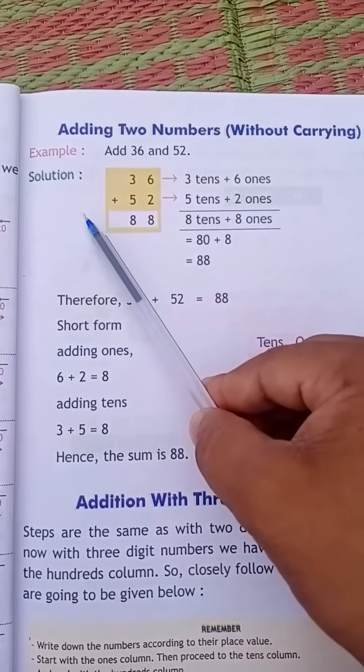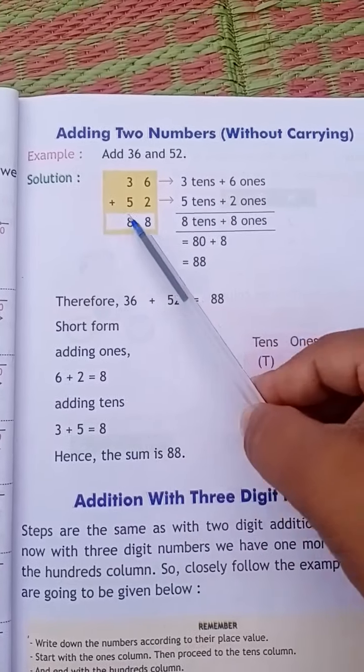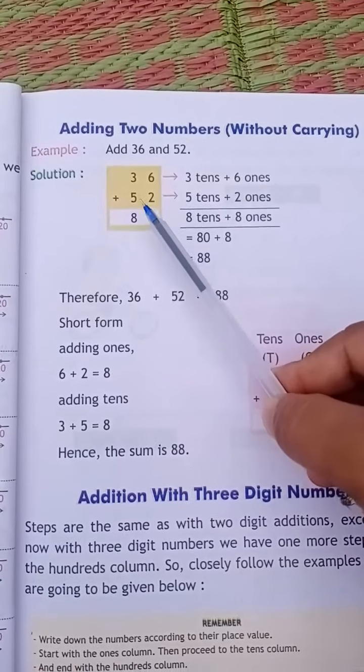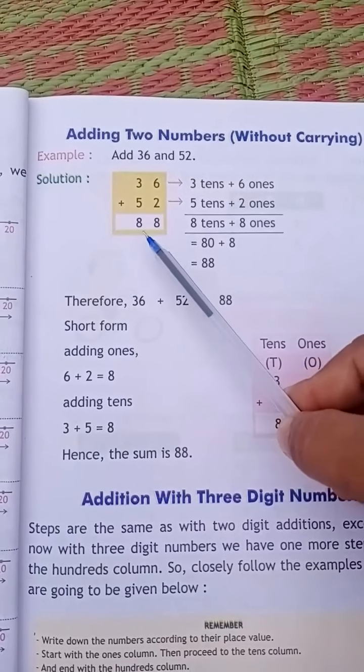So 8, which makes 88. 36 plus 52 is equal to 88.